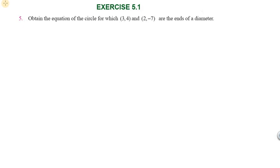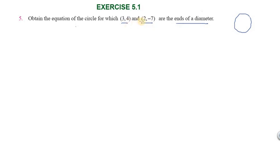Hi students, greetings from sex education academics. This is 5.1, question number 5: obtain the equation of the circle. The end points of the diameter are (3,4) and (2,1). So we have a circle where the diameter ends are at (3,4) and (2,1).